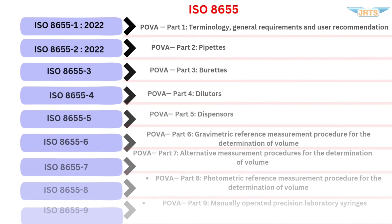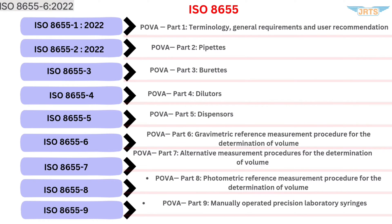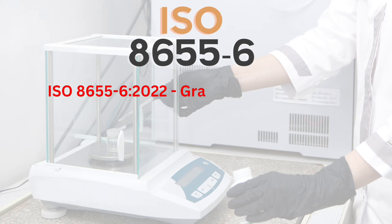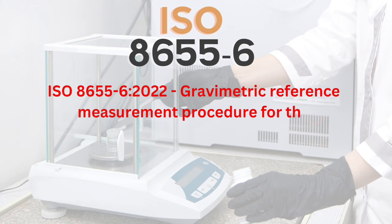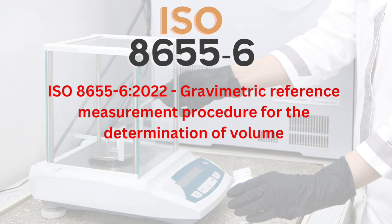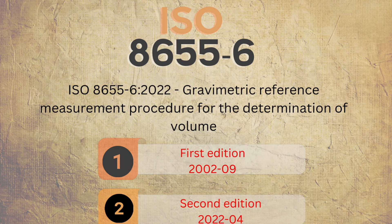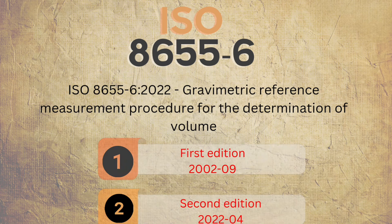ISO 8655-6 2022: Gravimetric Reference Measurement Procedure for the Determination of Volume. This is the 2nd edition, published 2022-04, updated from the 1st edition of 2002.